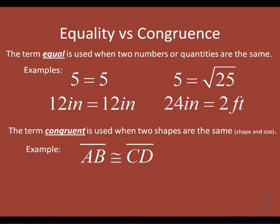A student attempts to read the notation on the board: 'Line segment AB... is congruent to...' After some back and forth, the student identifies the congruent symbol. The teacher confirms: this symbol right here means congruent. So we would read this: line segment AB is congruent to line segment CD.